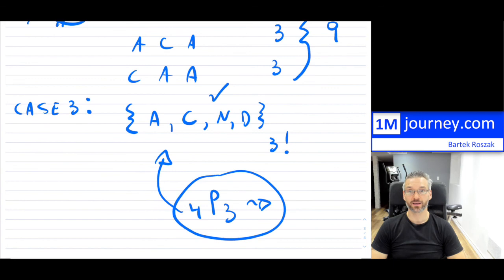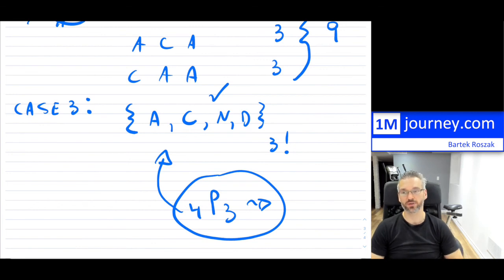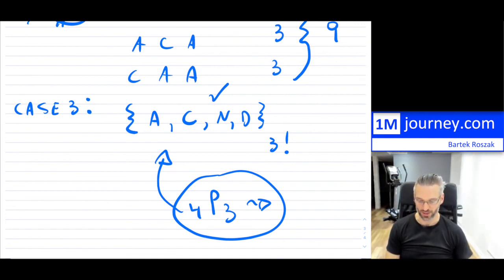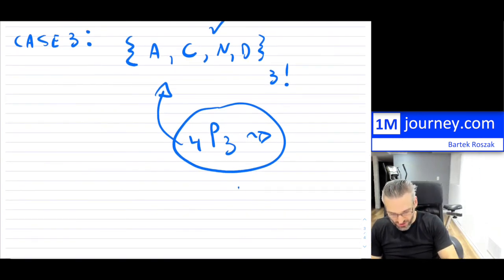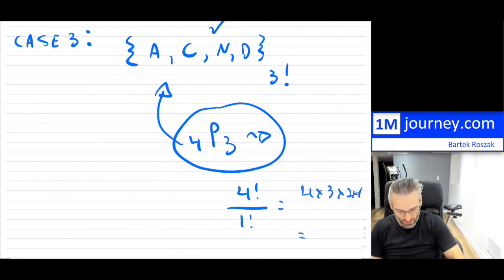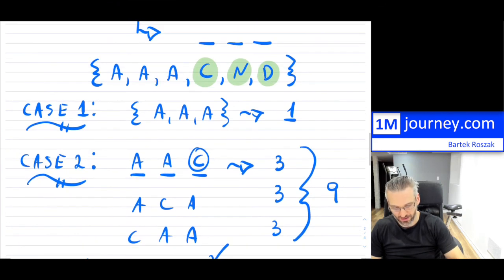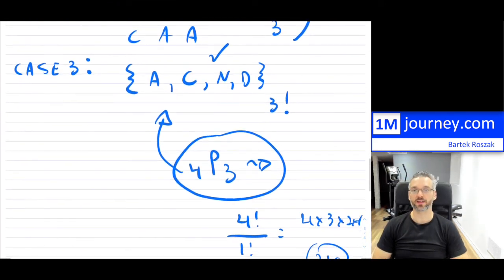Yeah, it is a lot of work. But with repetitions, there isn't an actual pure formula — we have to use the additive principle and add up the cases. 4P3 equals four factorial divided by one factorial, which is four times three times two times one equals 24. So we have 24 plus nine plus one — add them all up and you have your result.